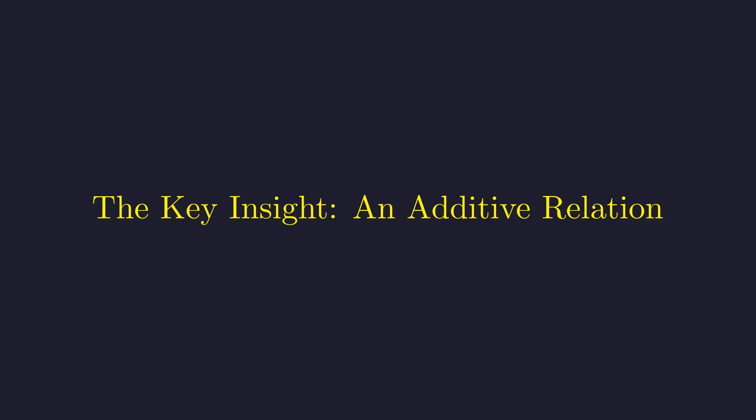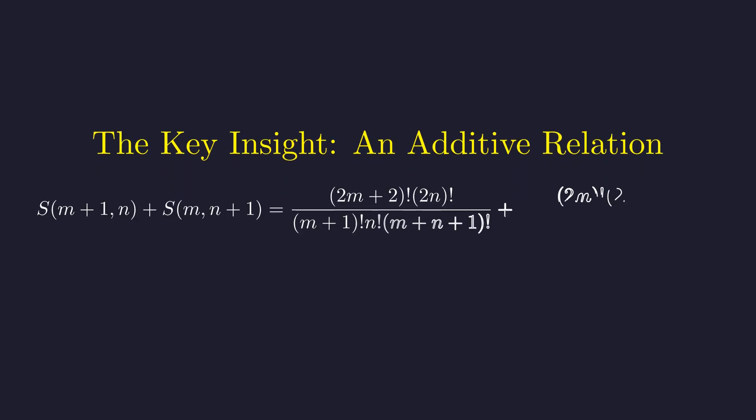So here's a different idea. Instead of looking at ratios, what if we look at sums? Specifically, let's see what happens when we add the value at m plus 1, n with the value at m, n plus 1. When we substitute the definition, we get this rather unwieldy expression. But don't worry, there's some beautiful structure hiding in here.